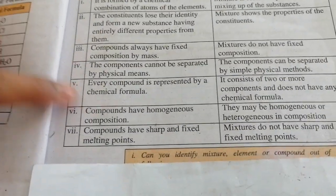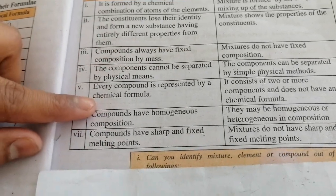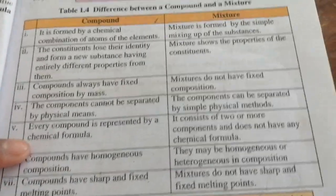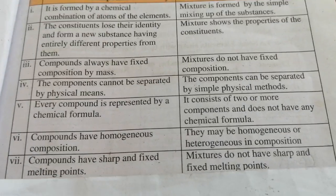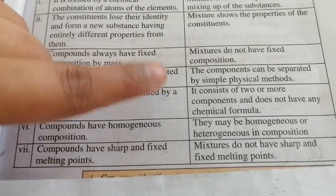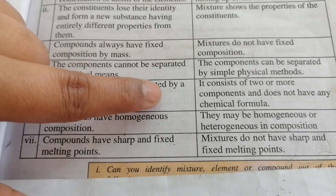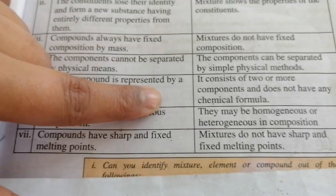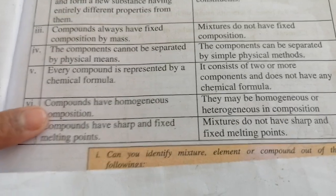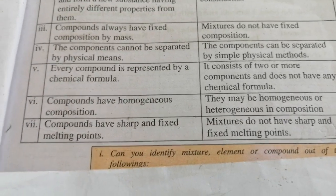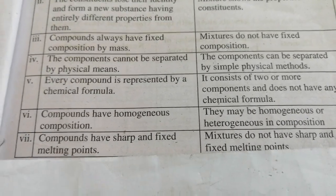Every compound is represented by a chemical formula. For example, water is represented as H2O. But for a mixture, no chemical formula is used. A fruit chart, for instance, has no chemical formula because it is simply a combination of components.